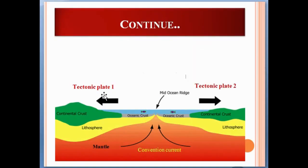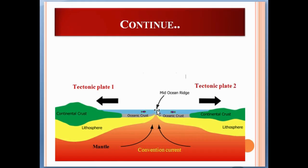Here, this is tectonic plate one and this is tectonic plate two. This is the mantle area and this is the lithosphere — the continental crust and oceanic crust. When these two plates are moving apart, the convection current is generated in the mantle, and this heat transfers towards the lithosphere and crust. Less dense material erupts towards the ocean floor. When magma reaches the ocean floor, it cools and forms a mid-oceanic ridge.